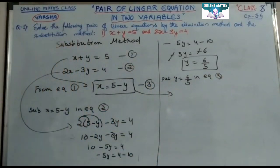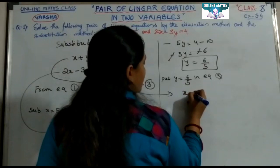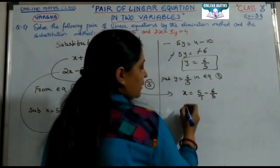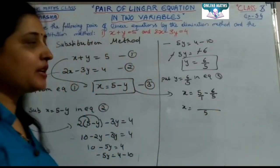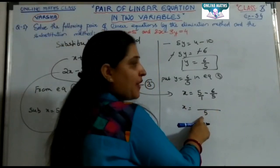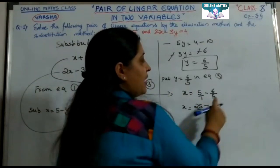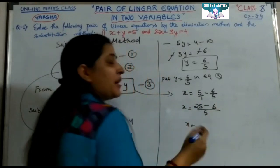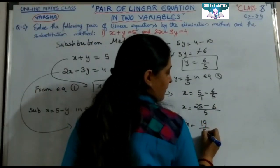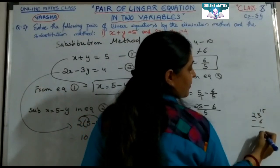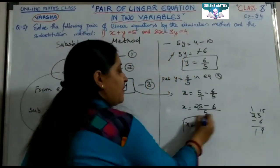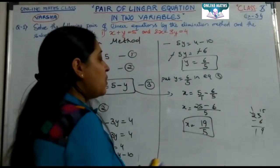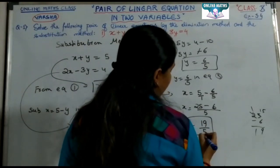Now put y equals 6 by 5 into x equals 5 minus y. So x equals 5 minus 6 by 5, which is 25 minus 6 all over 5, giving x equals 19 by 5. See, using both the elimination method and the substitution method, you get the same answer: x equals 19 by 5 and y equals 6 by 5. Thank you.